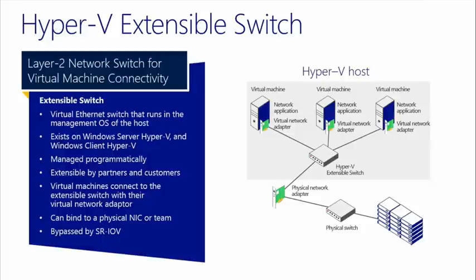VMs communicate out through the virtual network adapter that's bound to the virtual switch. In the diagram, we see a Hyper-V host with a couple of virtual machines. Each VM has a single virtual network adapter — VNICs — attached to the single Hyper-V extensible switch. That switch is bound to the physical network adapter, which is bound to a physical switch, allowing the rest of the network to communicate.